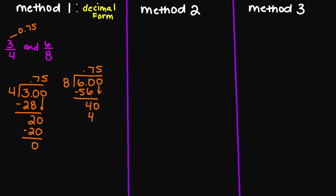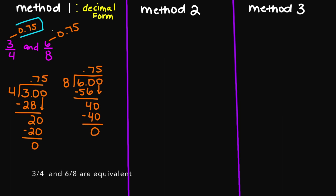Eight times five is 40. 40 minus 40 is going to equal zero. So for this fraction here, six over eight in decimal form also equals 0.75. So as you can see, because we have the same decimal form for these two fractions, we know that yes, they are both equivalent.